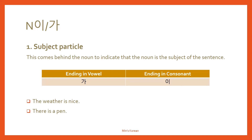For example, 'The weather is nice.' The weather, 날씨, is the subject of this sentence. So you say 날씨가 좋아요. And next: 'There is a pen.' The pen is the subject of this sentence. So: 펜이 있어요. Both 날씨 and pen are subjects of their sentences, so you use the 이/가 subject particle.